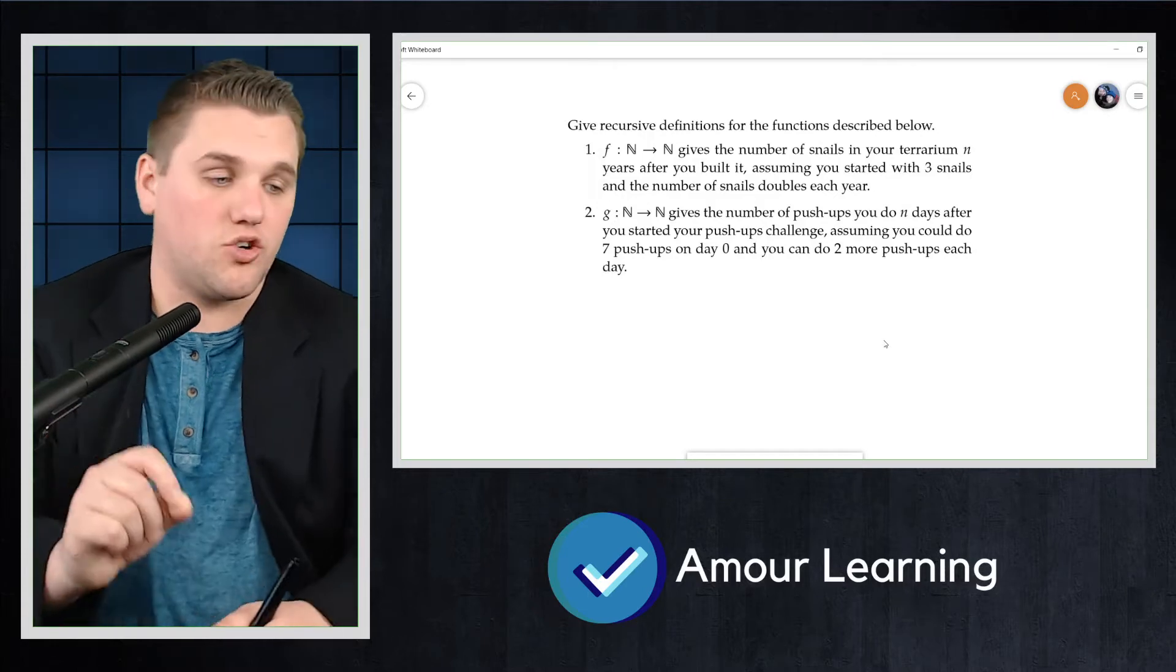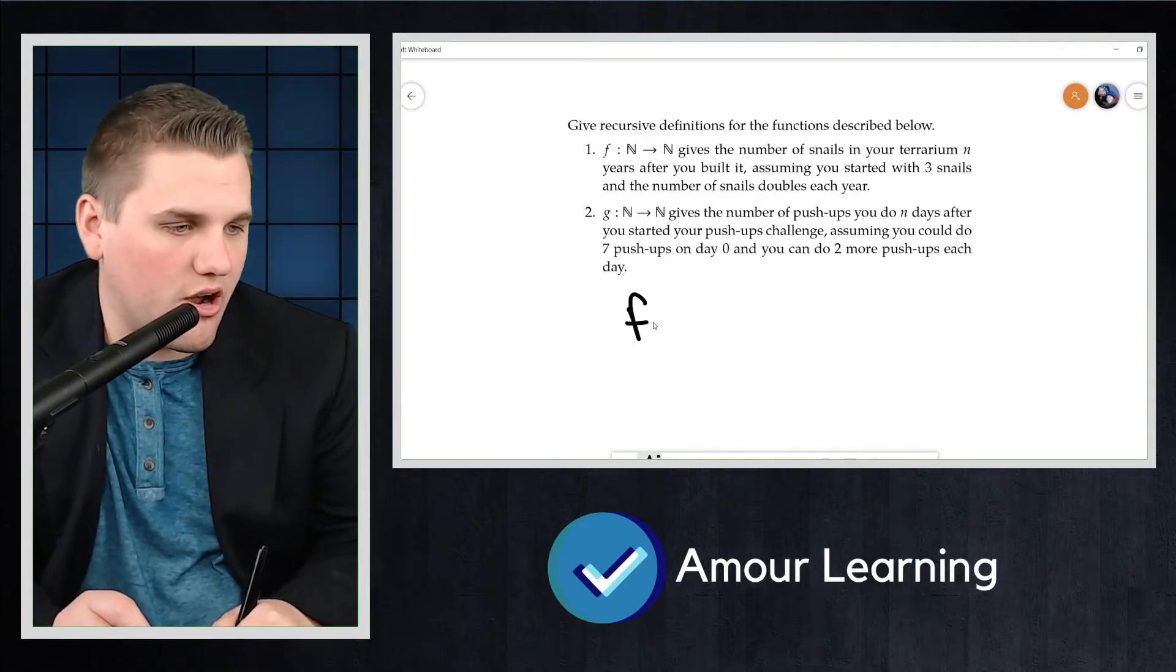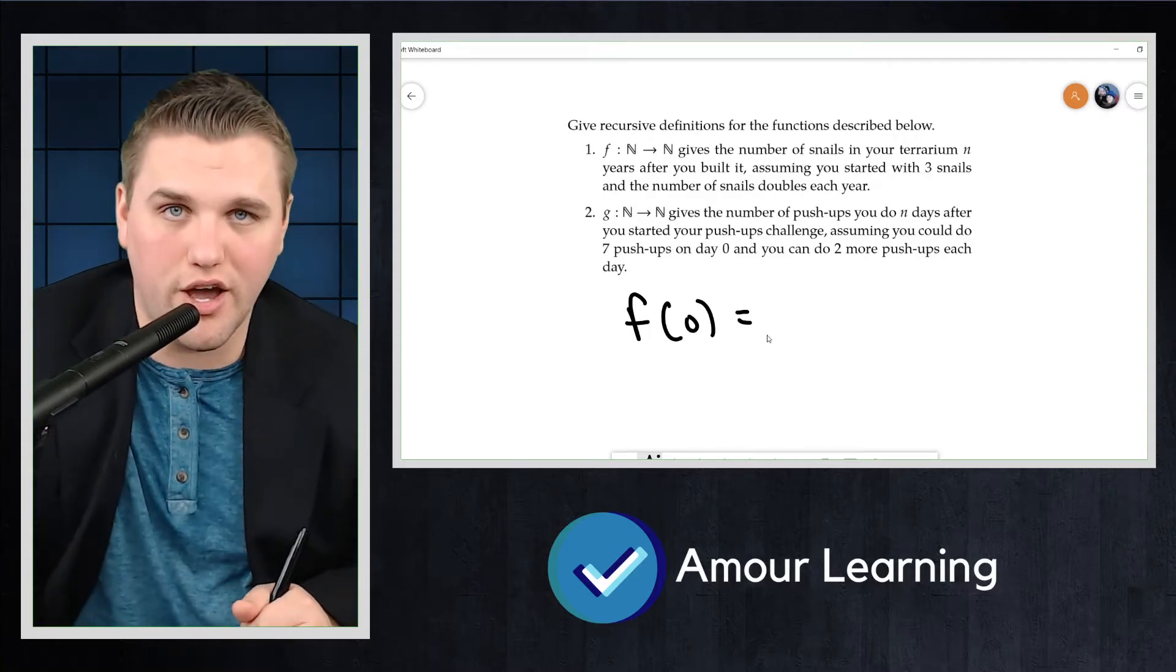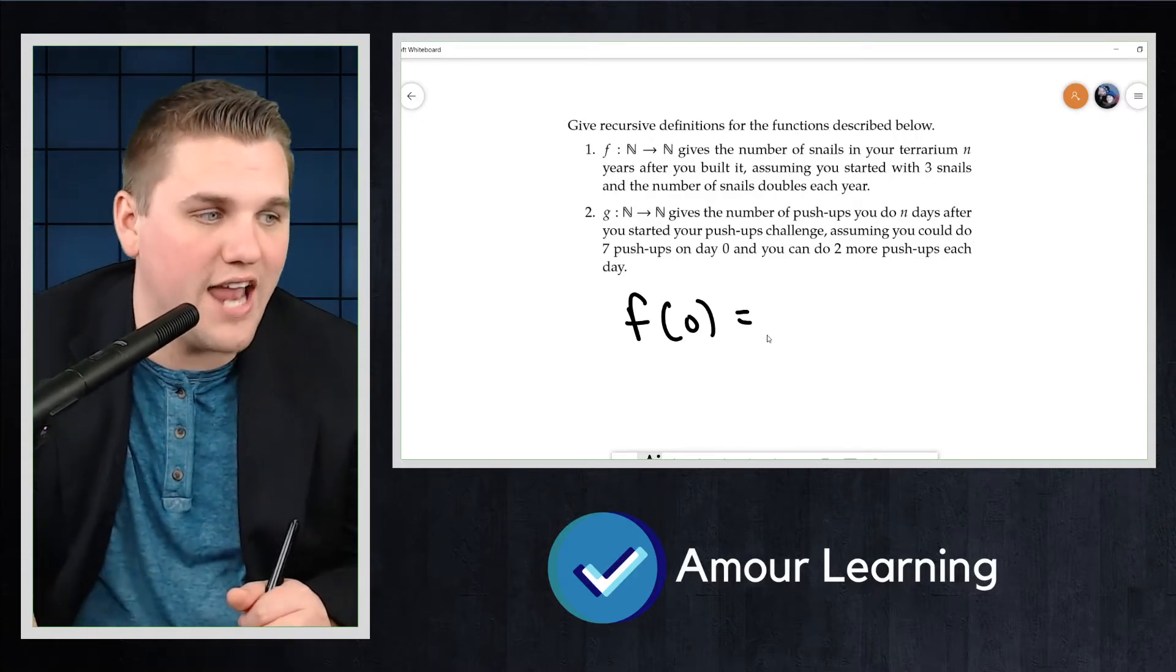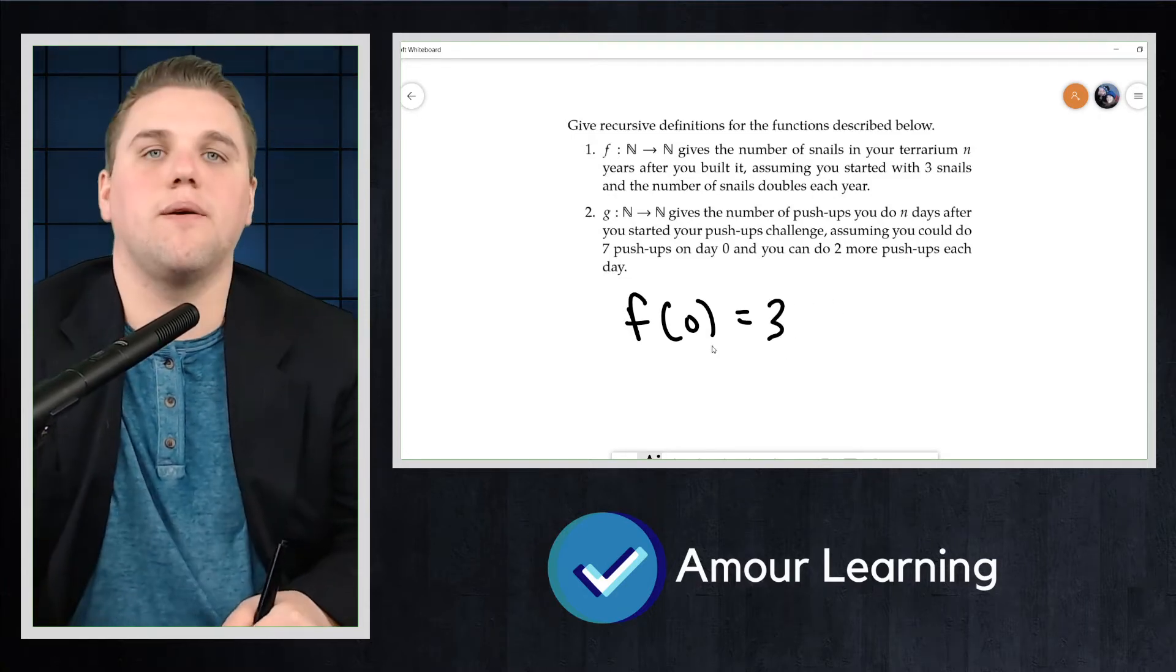So the first thing we need is the initial condition, namely, what is f(0)? How many snails do you start off with after 0 years? Well, that would be 3.